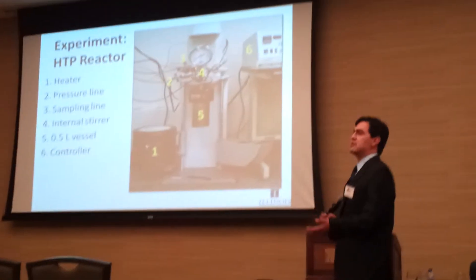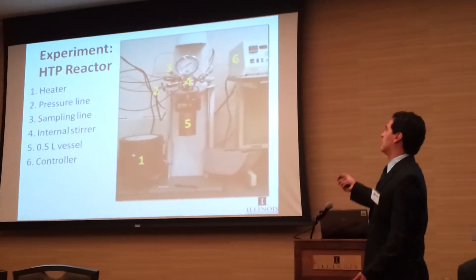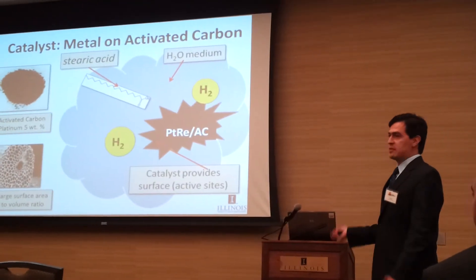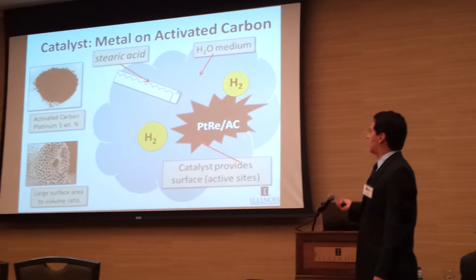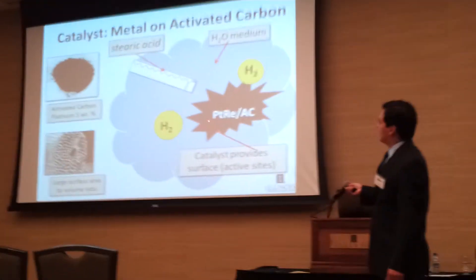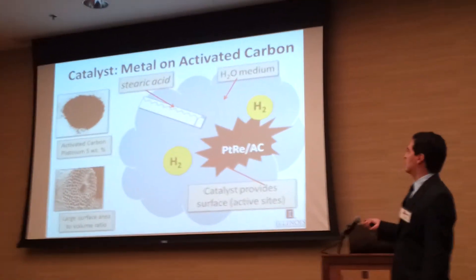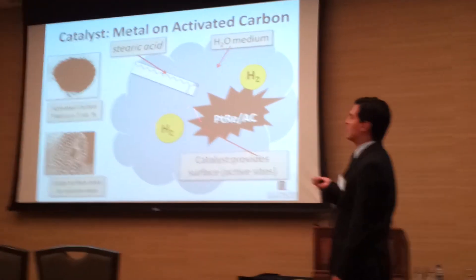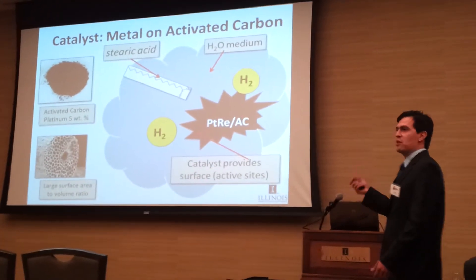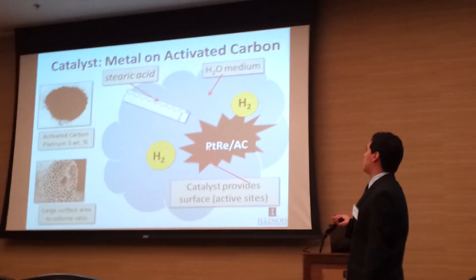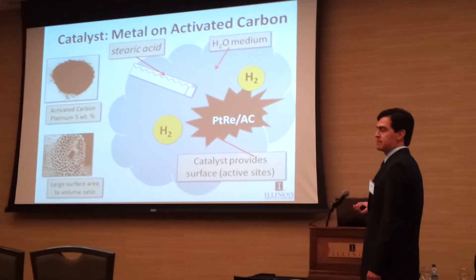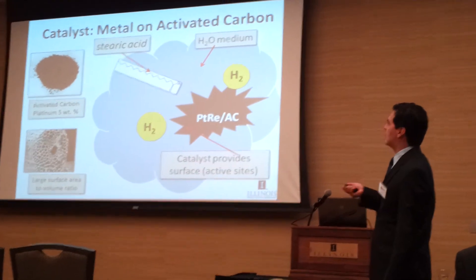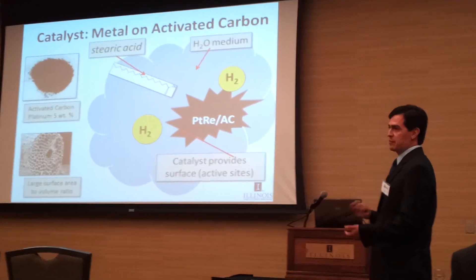We tried a few different temperatures to understand the relationship between temperature and our reaction. This cartoon shows what we imagine is happening inside the reactor: water as a medium, the metal catalyst, and hydrogen being attracted to the surface, while stearic acid is introduced — the catalyst acting as an intermediary to help bring these together. We use activated carbon, which has a large surface area, and the metal attaches to this powder — this is the process of catalysis.